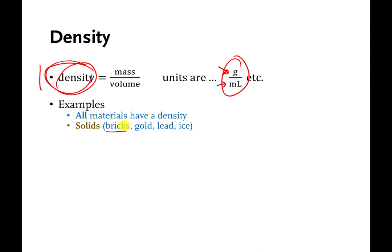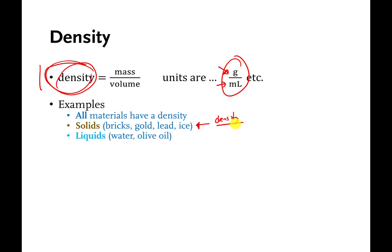All materials have a density. Solids have a density — a brick weighs something and takes up a certain amount of space, and gold, lead, and ice all have densities. For a lot of materials, if you're careful and specific about the temperature, the density can be a fingerprint for what the material is. Gold has a very specific density, and if your material matches it, there's a good chance it is gold.